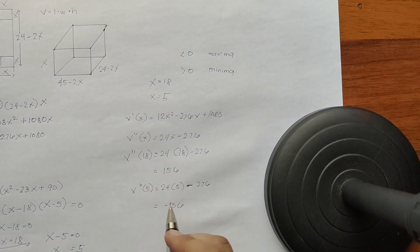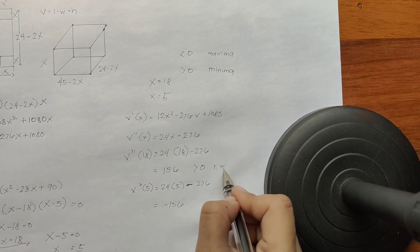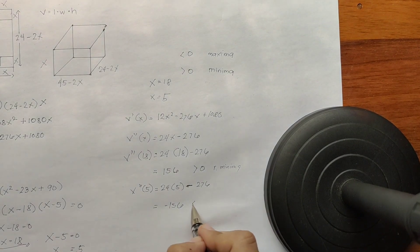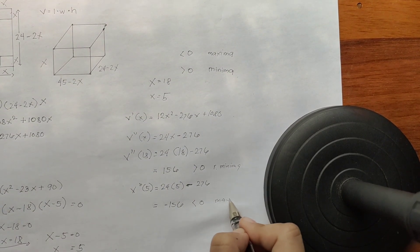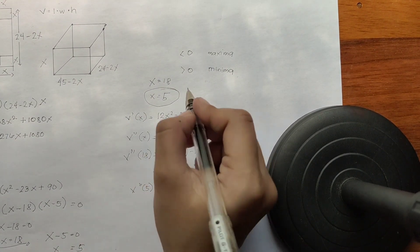And in this case, this is greater than 0, which is the minima. And less than 0 is the max. So therefore, x is 5, which is also our height.